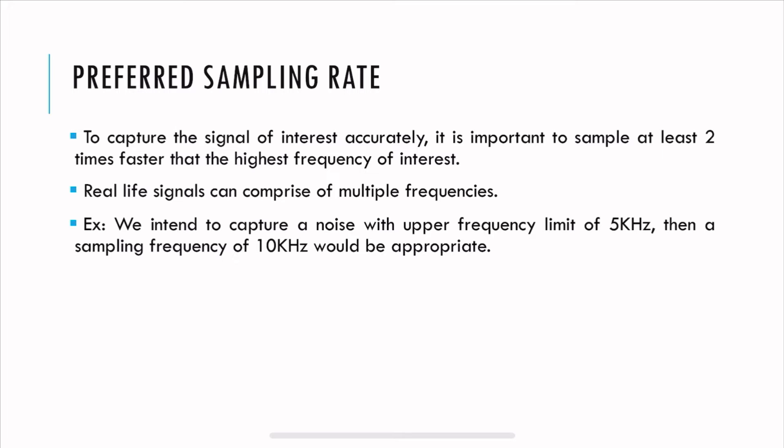What is the preferred sampling rate? To capture the signal as accurately as possible, it is important to sample at least two times faster than the highest frequency of interest. Real-life signals can comprise multiple frequencies. For example, if we have a frequency limit of 5 kHz, then we need to sample at 10 kHz to capture all signals within 5 kHz as accurately as possible.